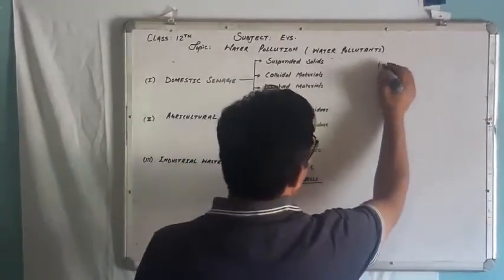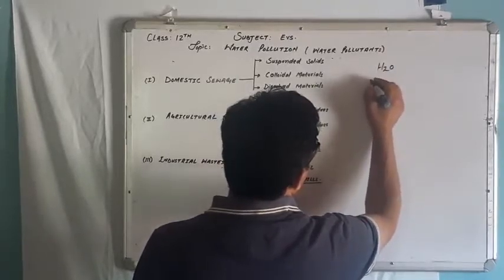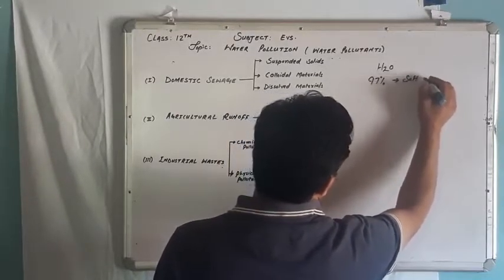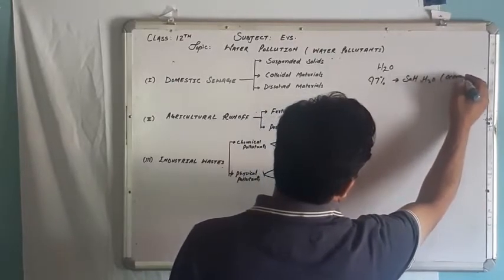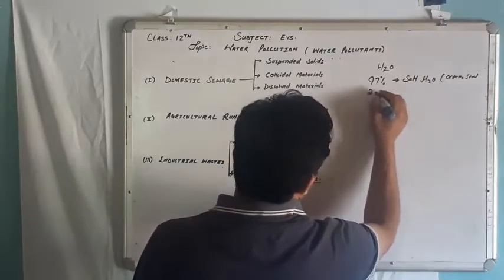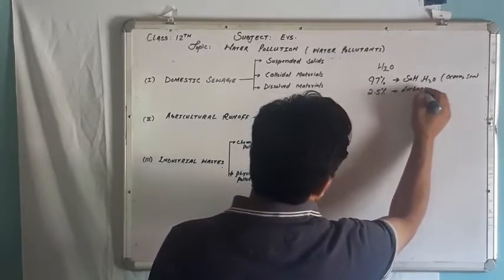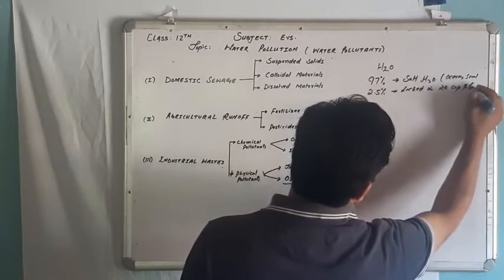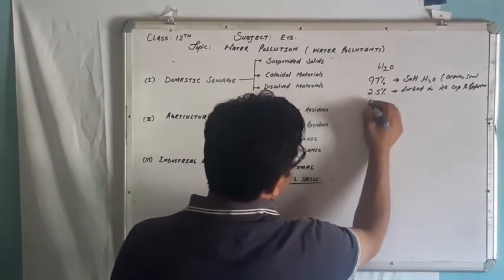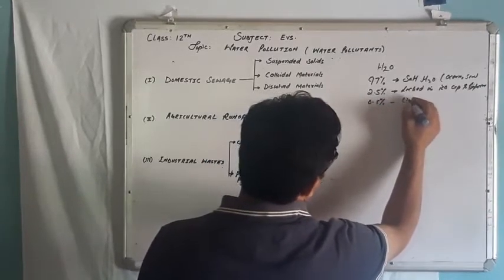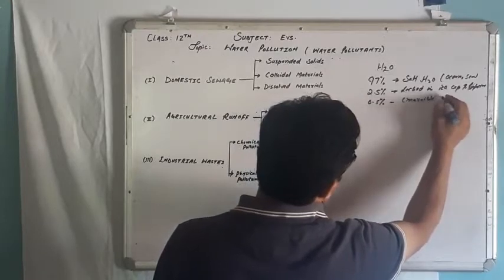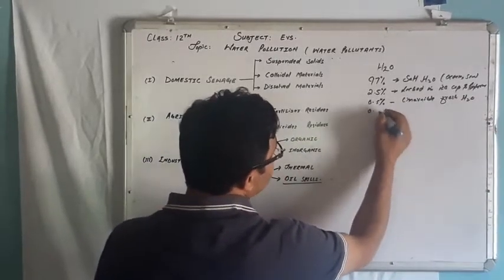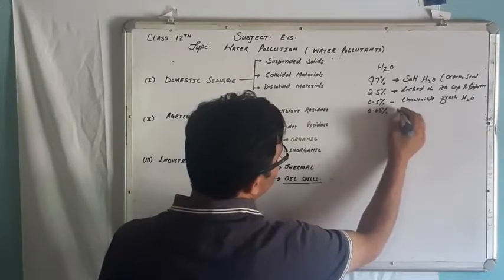As far as water distribution is concerned, about 97% of water is salt water or brackish water. About 2.5% of water is locked in ice caps and glaciers. About 0.5% is unavailable fresh water. So the water that is actually available to us is only about 0.03% of fresh water.